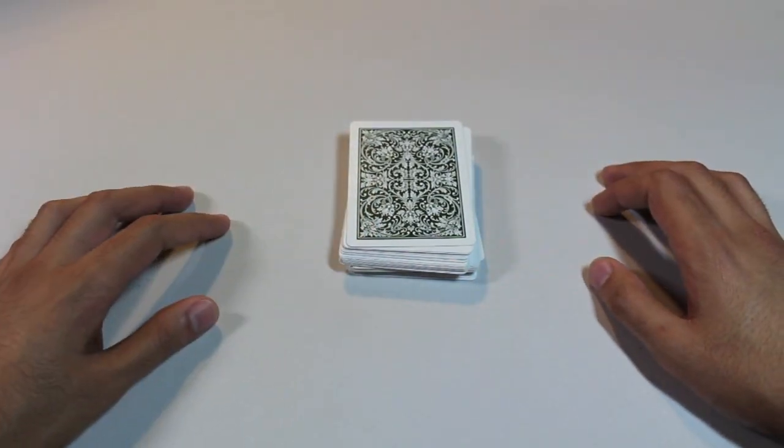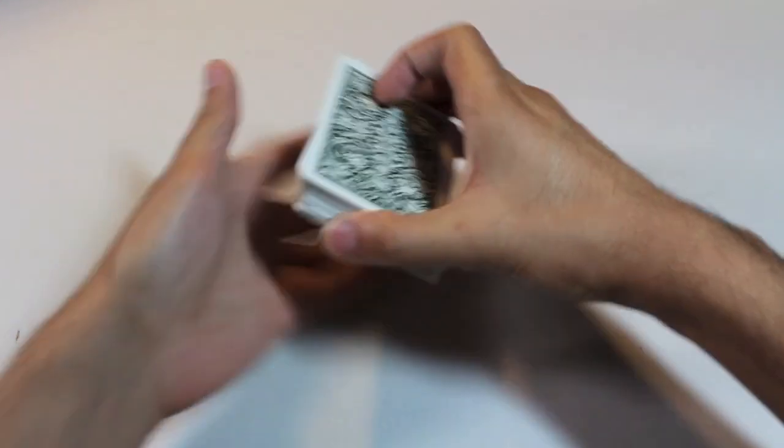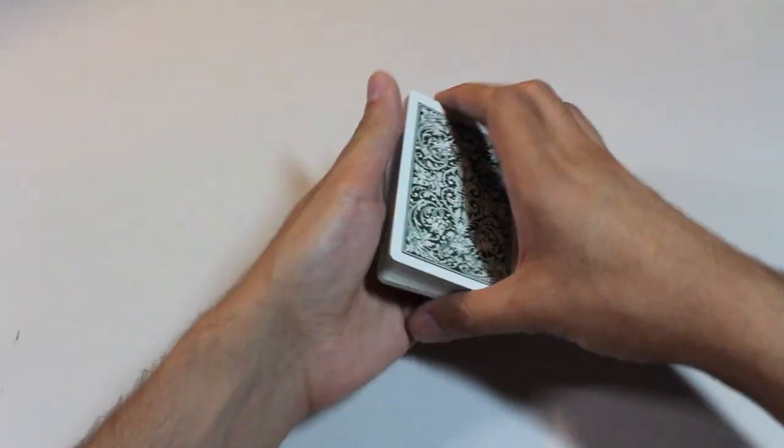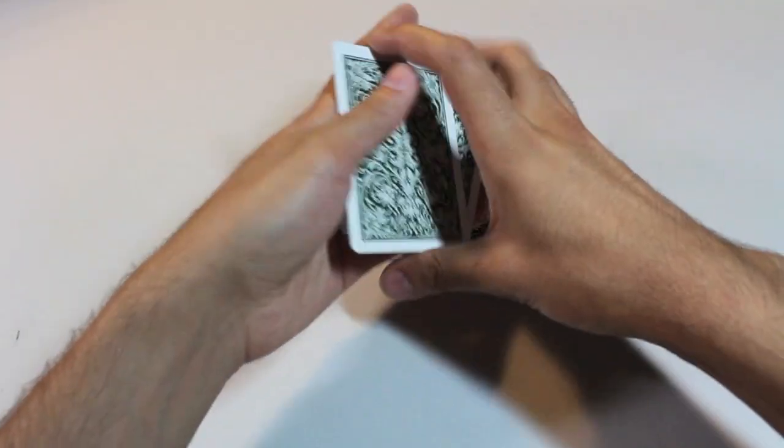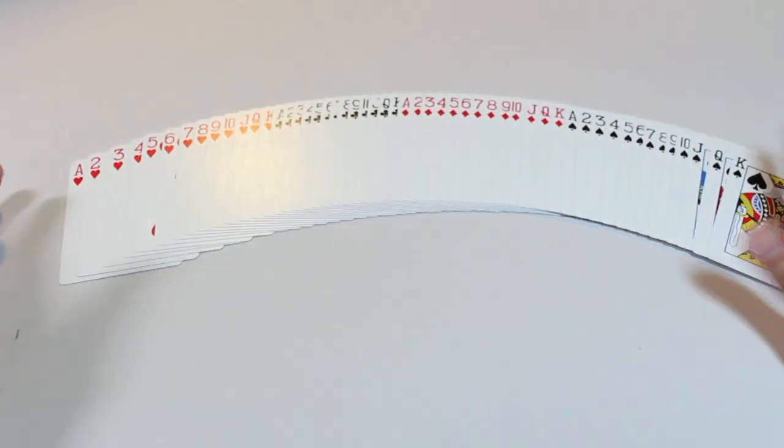Another neat thing about this is that you can chain two or more of these cuts in a row to make it longer. So for example I'm going to chain two of these false cuts together. So here's what that would look like. And of course the cards are still going to be in order.